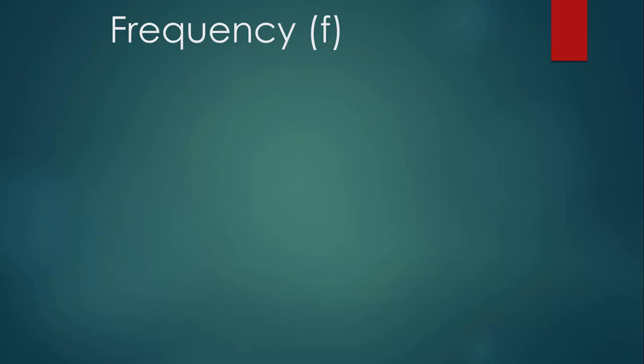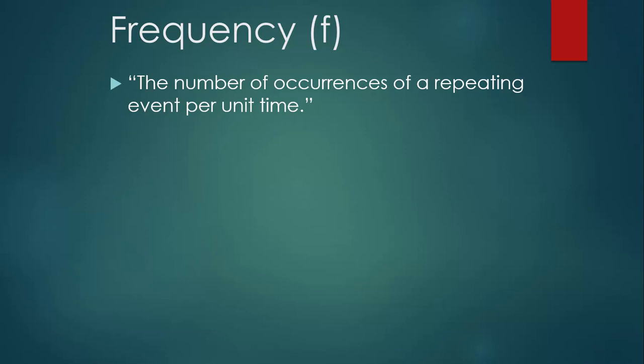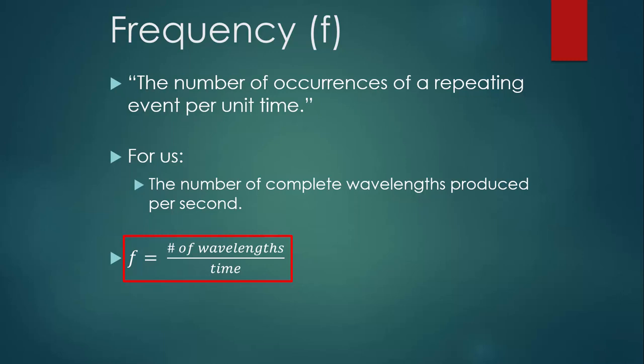How about frequency? A really broad way we could define frequency is the number of occurrences of a repeating event per unit time. But don't write that. For us, we'll describe frequency as the number of complete wavelengths produced per second or the number of oscillations per second. There's no equation for this on the reference table, but we could sort of write it in the form of an equation like this. F for frequency is equal to the number of wavelengths that you see in a picture or that are described to you. That's number of complete wavelengths or number of oscillations or number of crest trough pairs, divided by time.